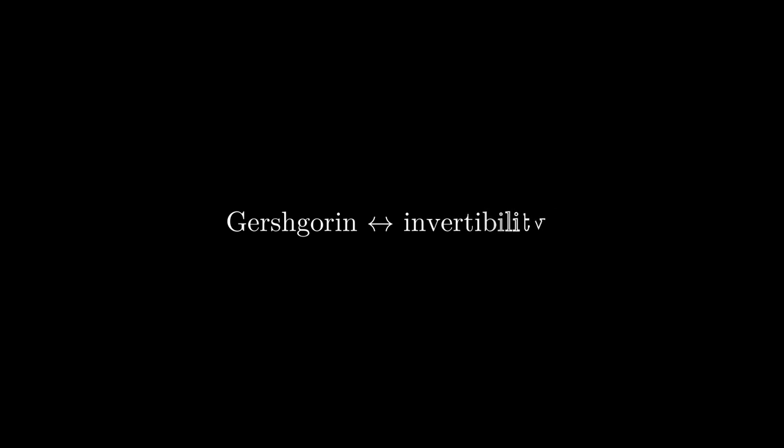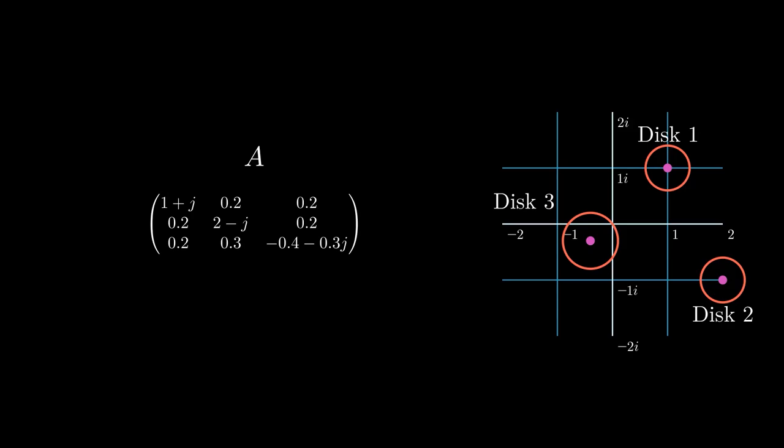Let's see another fun fact. If a matrix is almost strictly diagonally dominant, except one row, and this row is diagonally dominant, then it is still invertible. Look at this graph. Disk 1 and disk 2 are strictly diagonally dominant. They do not contain the origin. And disk 3 barely contains the origin. It goes through the origin. I claim that zero still cannot be the eigenvalue. This matrix is still invertible. Let's prove it from the graph.